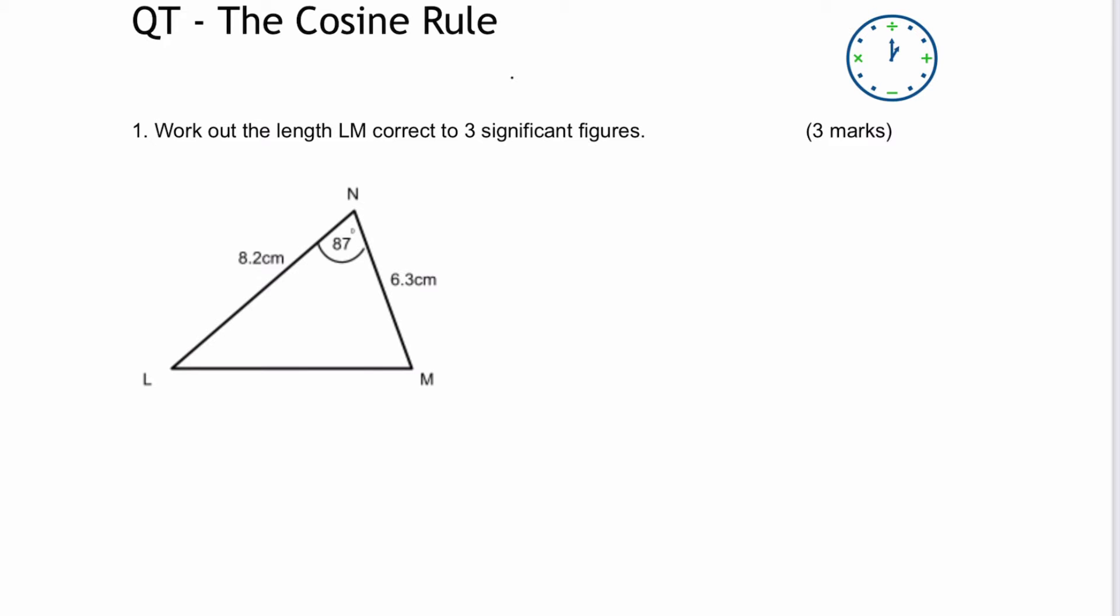Very typically within the formula sheet for the GCSE, you're going to get the formula a squared equals b squared plus c squared minus 2bc cosine a.